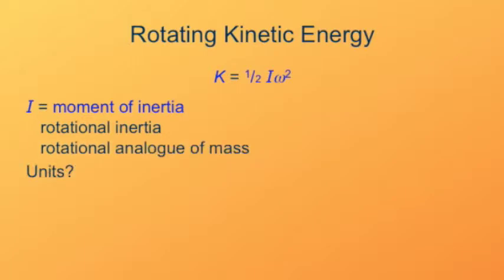What units must this be in? Well, we see that we have to get units of joules, kilogram meters per second squared, by multiplying this I, whatever it is, by omega squared. Omega is in units of per second. Omega squared must be per second squared. So I must be in units of kilogram meters squared.